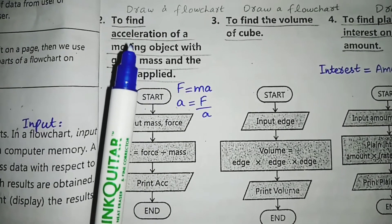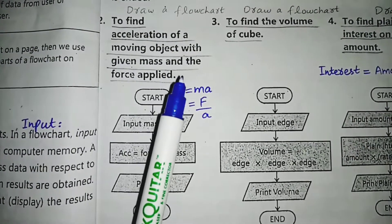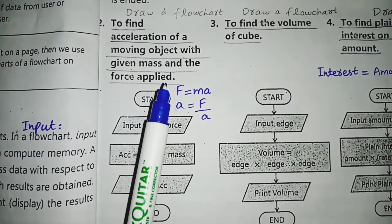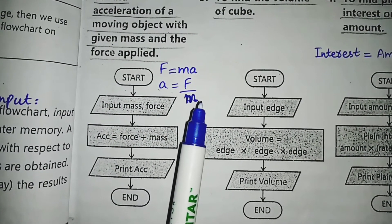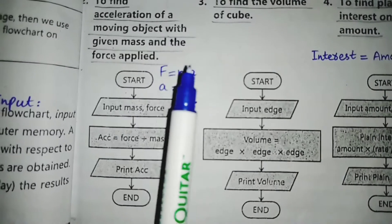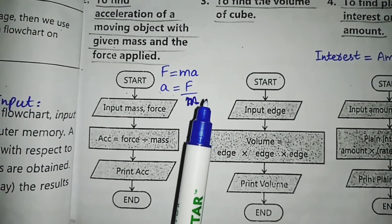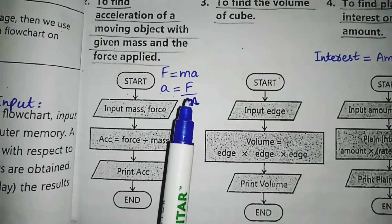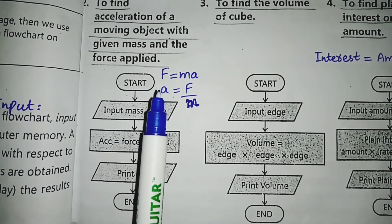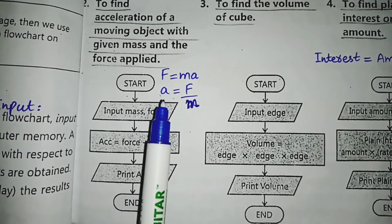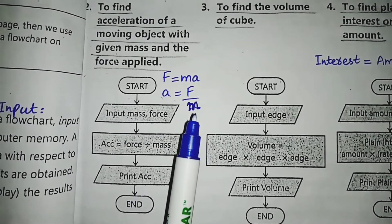The second flowchart is to find the acceleration of a moving object given its mass and the force applied. Students, you will study Newton's second law of motion. This is the mathematical form: F = ma. If we rearrange for acceleration, then a = F / m. In this problem, we have to calculate the acceleration using the force and mass values.